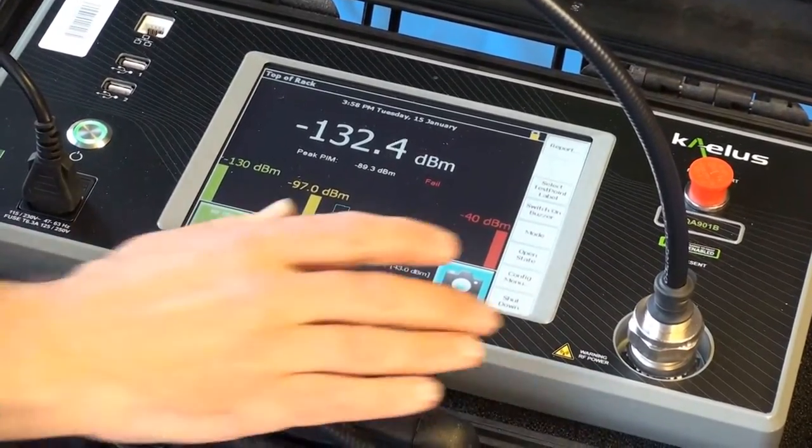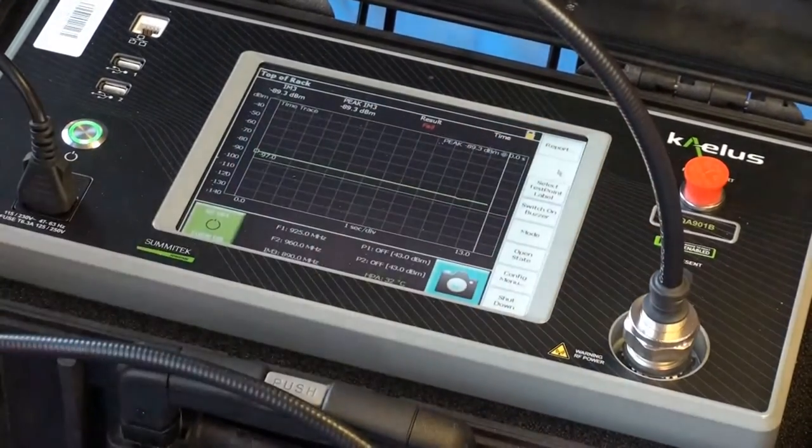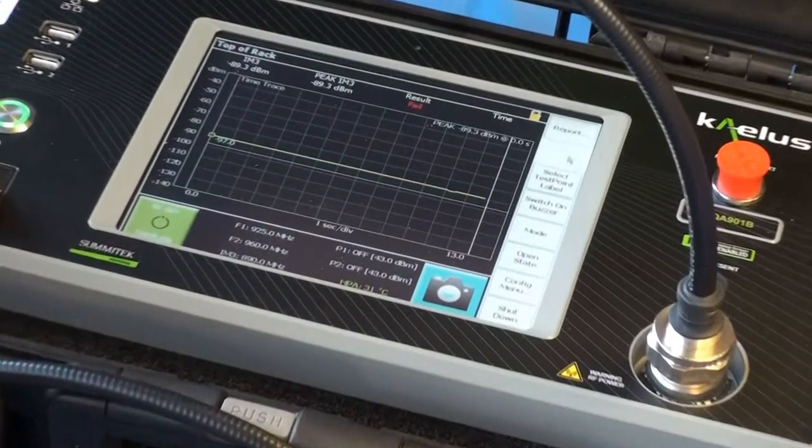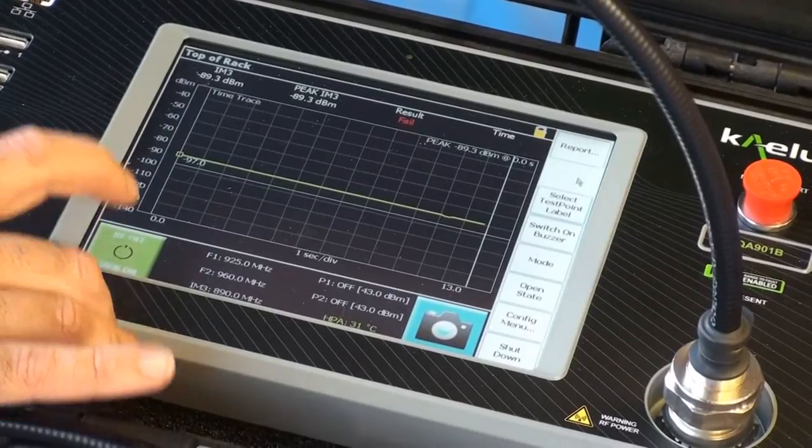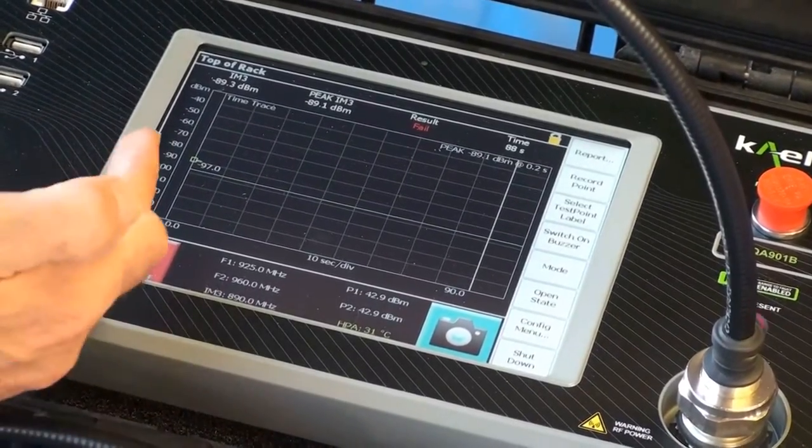Now, we can also measure in a different mode. We can use a time trace which shows us a plot of the PIM against time. So if I make another measurement, you'll see the plot building up.